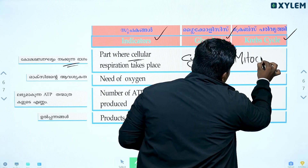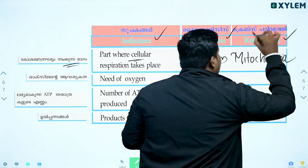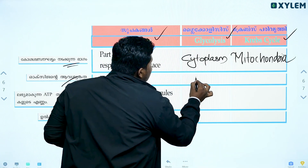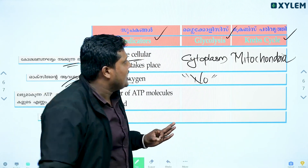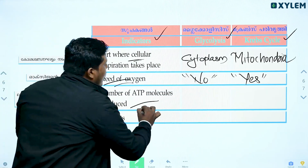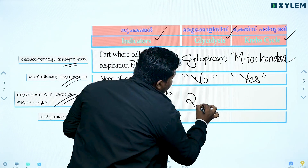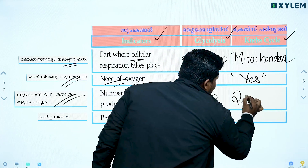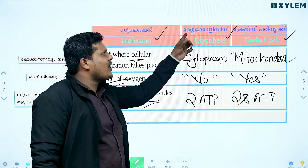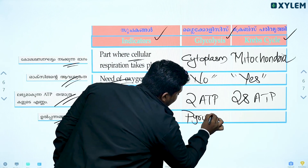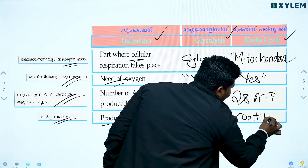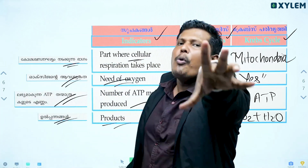Let's take a look. Mitochondria — need of oxygen. Oxygen to be available. Glycolysis — oxygen not required. Krebs cycle — oxygen is required. Number of ATP molecules: glycolysis produces 2 ATP, Krebs cycle produces 28 ATP. Product: glycolysis — glucose converted to pyruvic acid. Krebs cycle — pyruvic acid is converted to carbon dioxide and water.